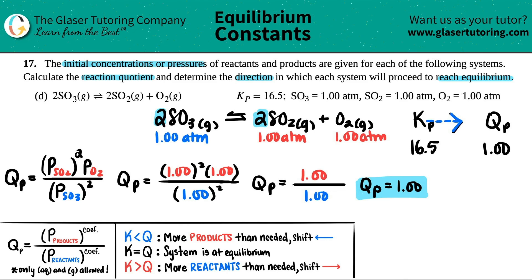You're going to go to the right, and that kind of makes sense—you want way more products than what you have at the moment. This K is greater than the Q, so we're going to shift, or proceed (whatever you want to say), to the right. And that's it. Basically, you are favoring the forward reaction. That's it, guys. Hopefully this helped. Thank you for tuning in.